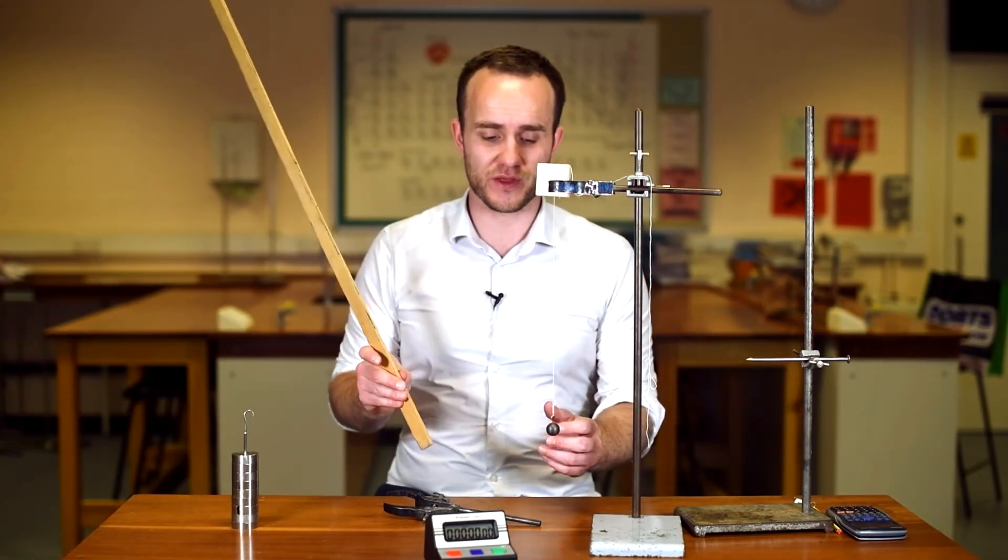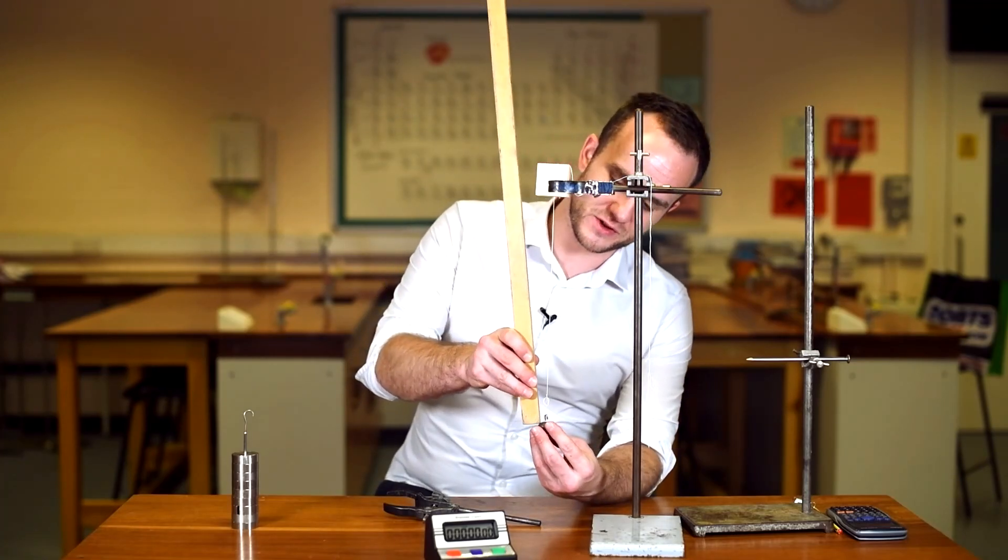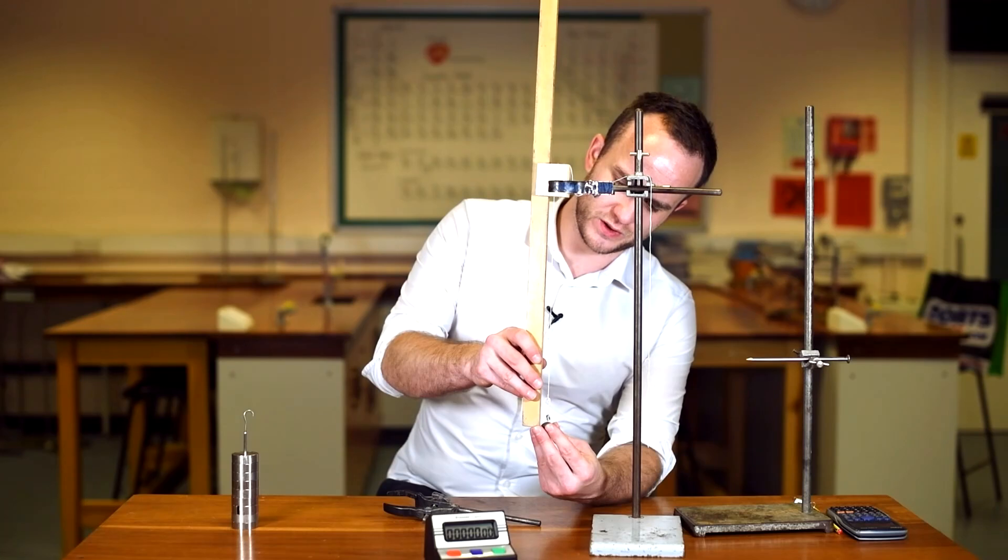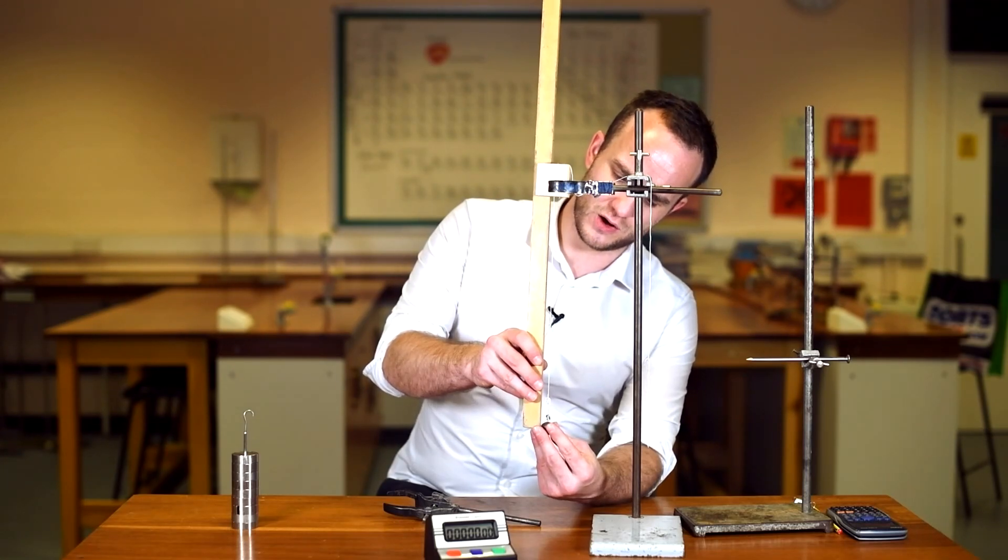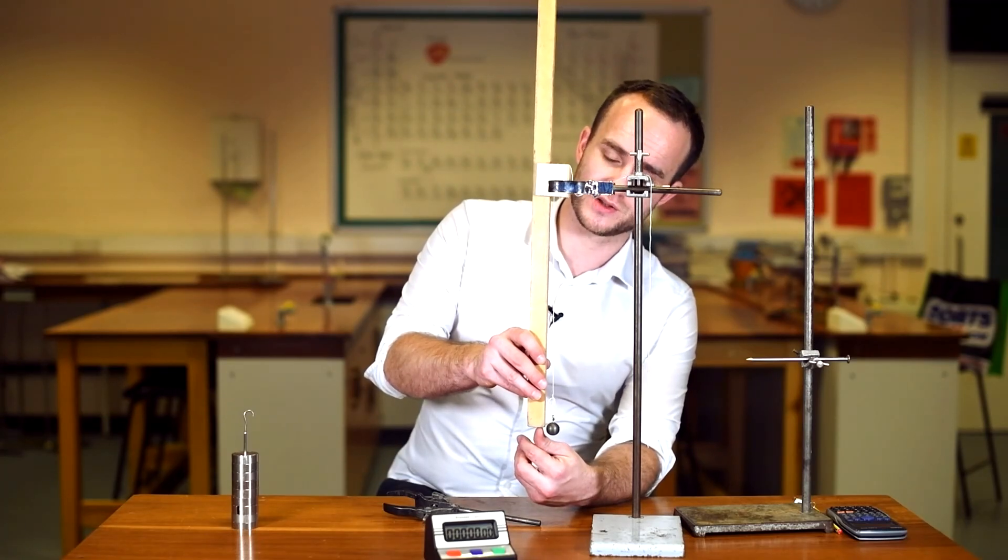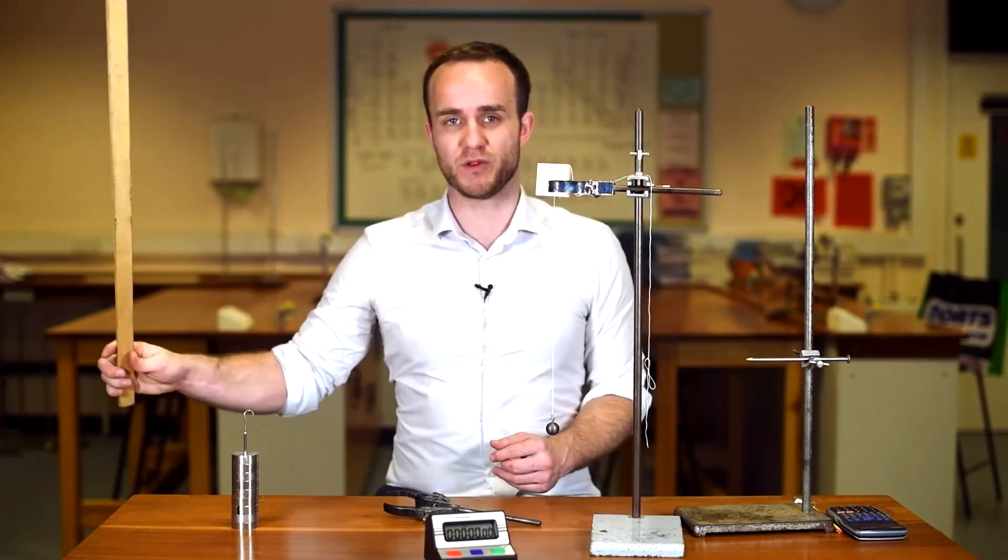I've got mine set up here for 30 centimeters, so I'm just going to check that that's correct. Notice that I'm measuring from the bottom of the wood to the middle of the bob. That's to make sure that I'm measuring to the center of mass, not to the top of the bob or the bottom of the bob.